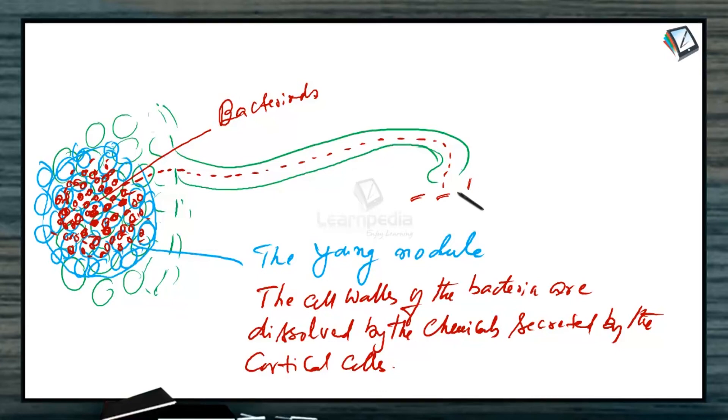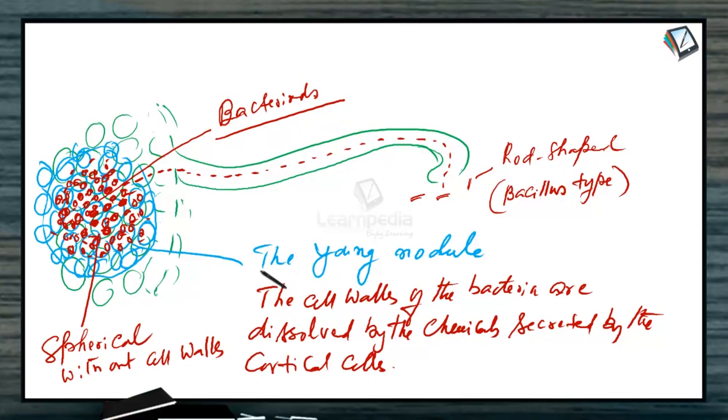Bacteria which are in the soil, the rhizobium bacteria, they are rod shaped. So rod shaped bacteria are called Bacillus type. These rod shaped bacteria in the nodule become spherical without cell walls. So they are called Bacteroids.